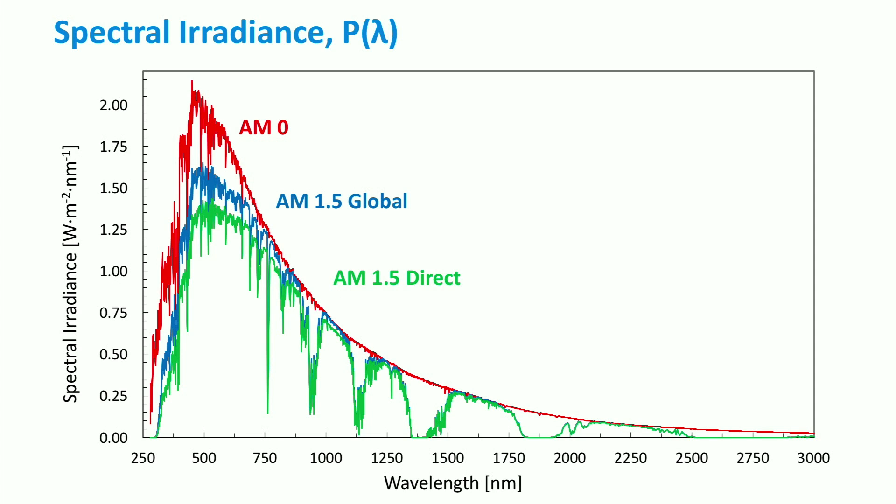Instead, the green curve is the direct AM 1.5 spectrum. It is obtained from the global AM 1.5 spectrum by considering only the light shining in the direction normal to the illumination plane. The shape of the spectrum is very similar to the blue curve, but its intensity is sensibly lower in the visible part of the spectrum.